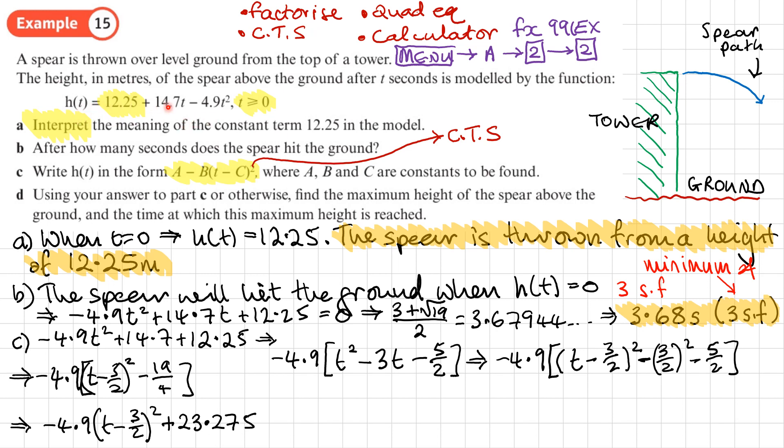Now I can see that we've got A, B and C. So just for clarity I'll write down what A, B and C are. So my value of A, the number that's on its own, is 23.275. My value of B - that's the number in front of the brackets - it says -B, so I've got -4.9, so B is actually 4.9. And then C, that is the number in the brackets, so that's 3/2. Does that need to be negative or positive? It's already got a negative there, so -1.5. I could write 3/2, I'm just being consistent in that everything else is a decimal. So A: 23.275, B: 4.9, and C: 1.5.